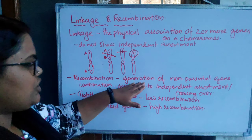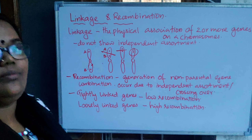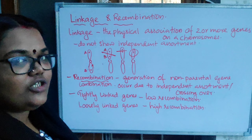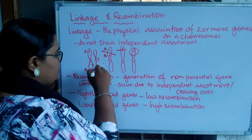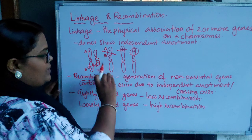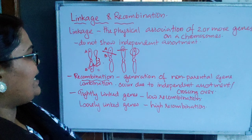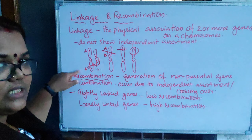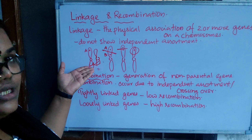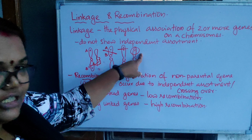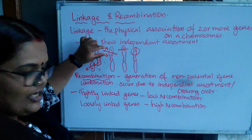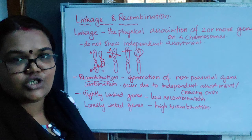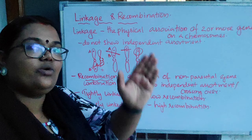What do we mean by recombination? The generation of a non-parental gene combination is called recombination. This happens because of crossing over. When crossing over occurs, genes get separated and form a different combination from the parent — that is called recombination. If the distance between two genes is more, there is a high chance of recombination. But if it is a linked gene with less distance, there is less chance of recombination and the parental character passes as such to the next generation.